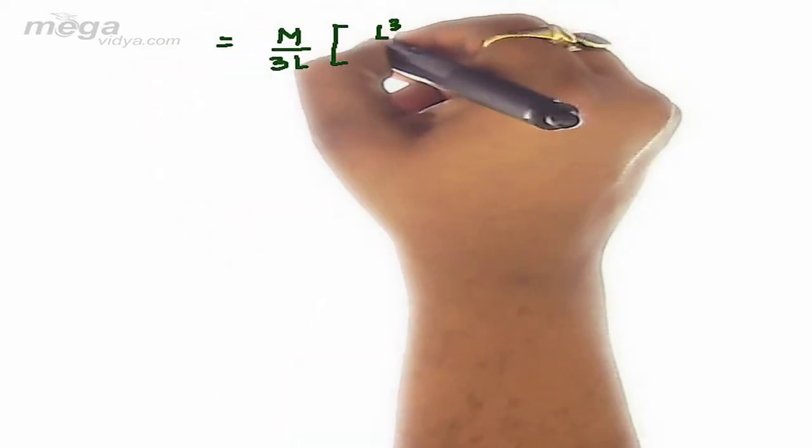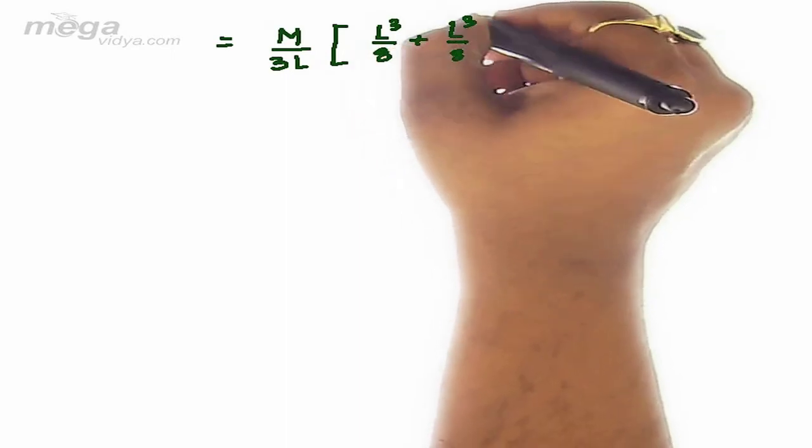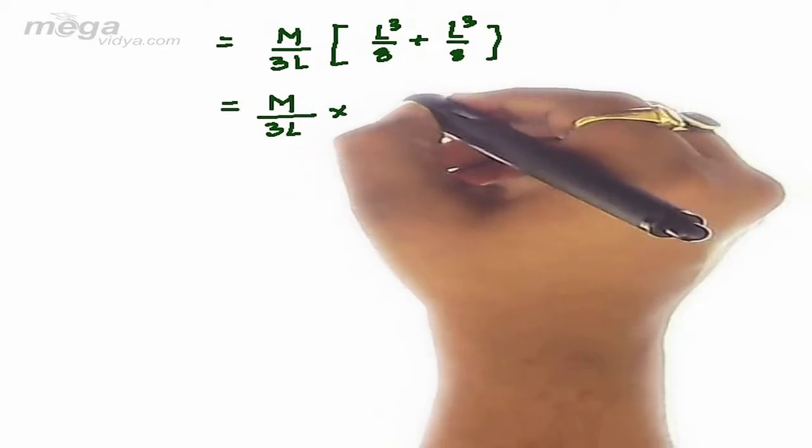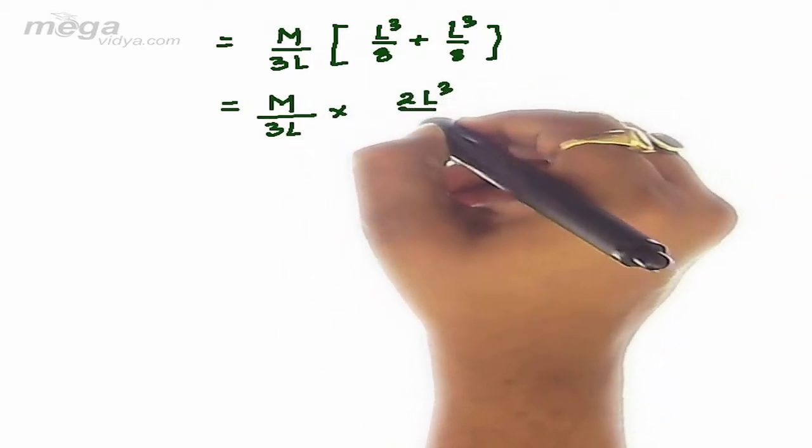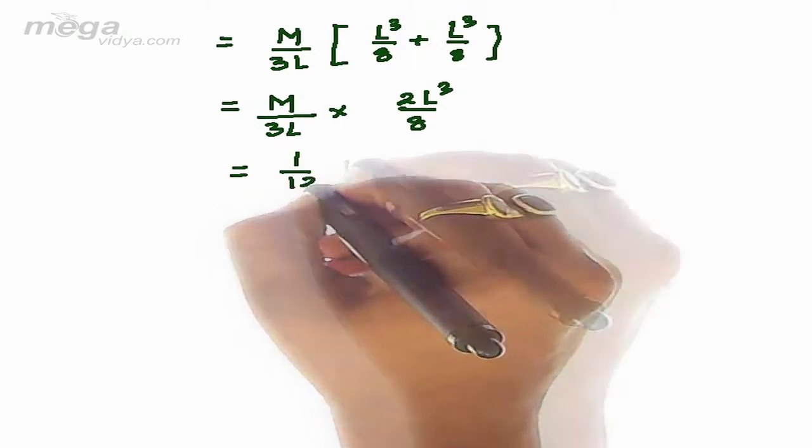Which will be equal to L cubed upon 8 plus L cubed upon 8, which will be equal to M upon 3L multiplied by 2L cubed upon 8, which will be equal to 1 upon 12 ML squared.